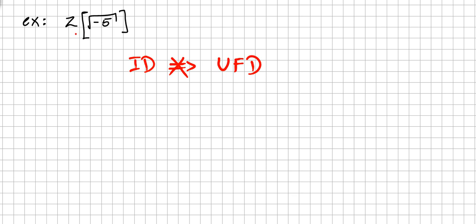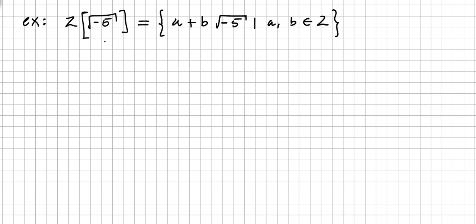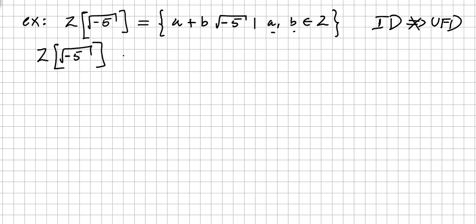I choose this example: this ring is nothing else but the set of elements a plus b√(−5), where a and b are integers. We are going to prove that this is an integral domain but not a unique factorization domain. I'm not going to prove that it is an integral domain here — if you've watched the previous videos, you can easily check that.